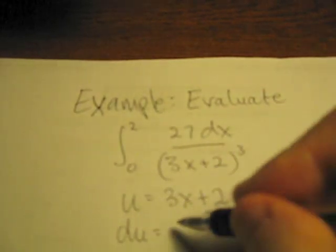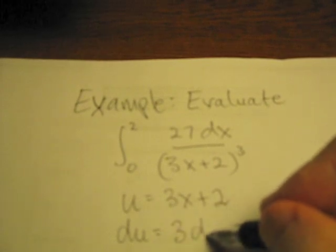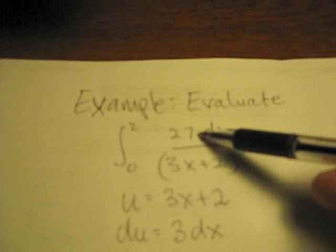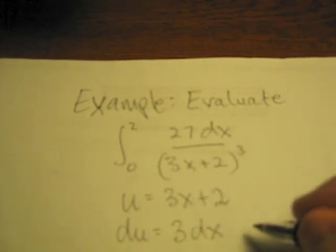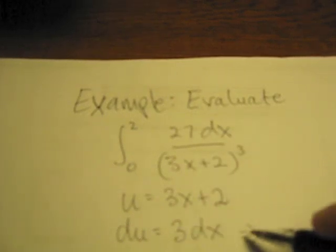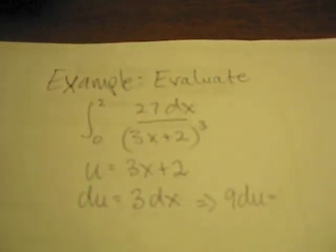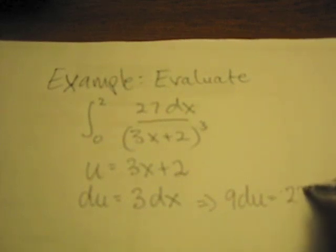Now, this would mean that when I find the derivative in differential form, I would get du equals 3 dx. Notice this is starting to look very much like the 27 dx, because that will imply that if I multiply both sides of this by 9, I would have 9 du equals 27 dx.